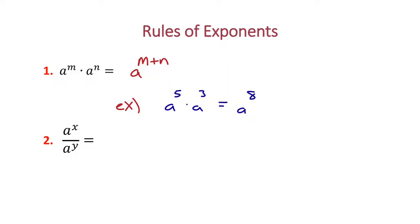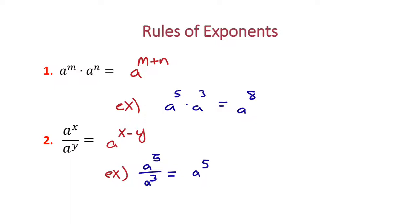Now if we look at division, instead of adding, we're going to subtract. So the rule is we're going to have a to the x minus y power. Our example: if we have a to the 5th divided by a to the 3rd, we simplify this to a to the 5 minus 3, or a squared.